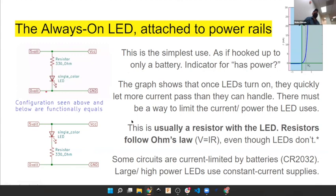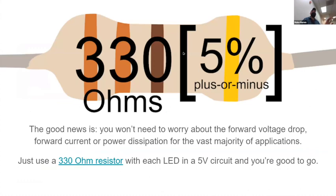This is the simplest use of an LED — you apply power and it runs. Most of the time you're going to want a 330 ohm resistor, which is the orange-orange-brown-gold resistor. The color code: orange means three, so two threes, the zero comes from brown, and gold is plus or minus 5%.